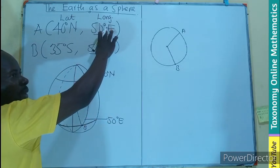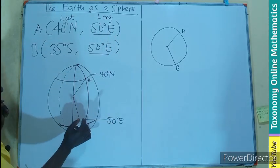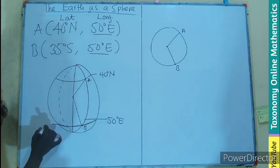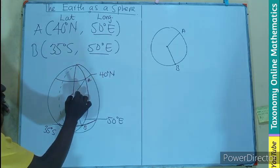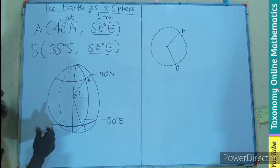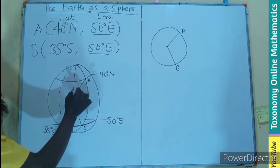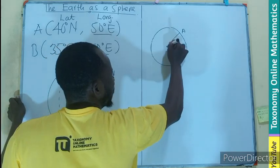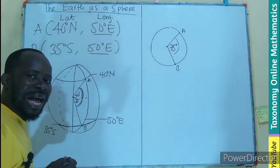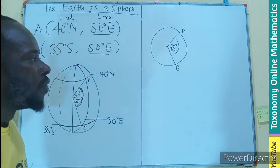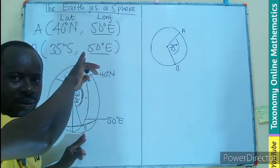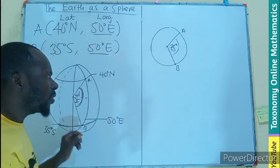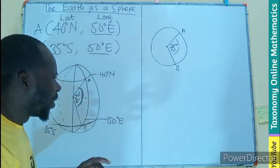Since the longitude is common for both points, we ignore it and take their latitudes. This latitude is 35 degrees south and this angle is 40 degrees north. So 40 is here and 35 is here, giving a combined angle at the center of 75 degrees. This is the angle at the center formed by the arc AB, which is the sector on that circle.